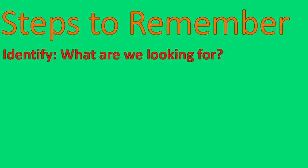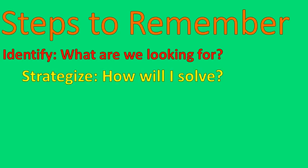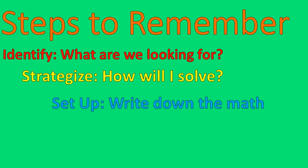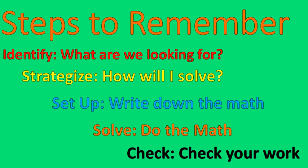What are the steps for solving math word problems? One, we identify what we're looking for — that's really important. In our last question, we could have accidentally added everything together and gotten it wrong. You need to know what you're looking for. Two, say how am I going to solve it generally? Then write down the math of how you're going to solve it. Do the math and check your work. Those are the five steps for solving a word problem. I hope that lesson's been helpful for you. Have a wonderful day.